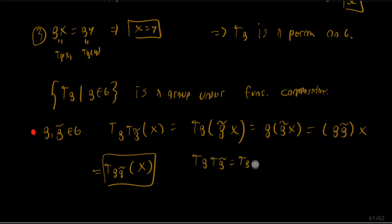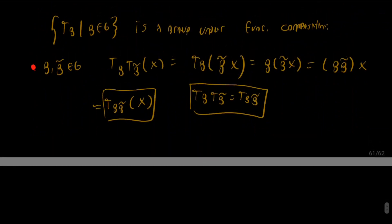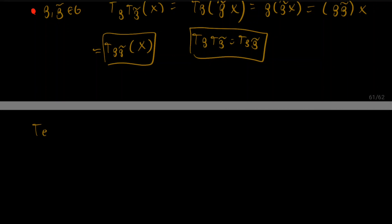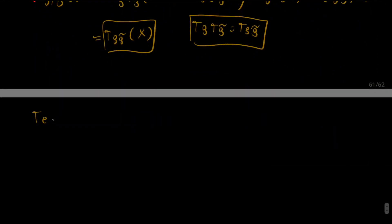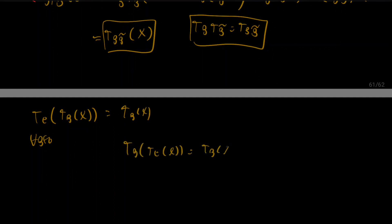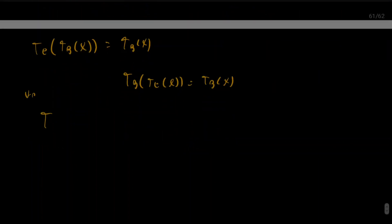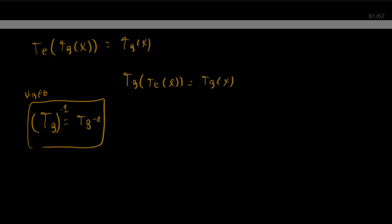Using this property, the identity of our set is T_e, since T_e ∘ T_g = T_{e·g} = T_g and T_g ∘ T_e = T_g. For inverses, the inverse of T_g is T_{g⁻¹}. These facts, together with the associativity of function composition, prove that this set under function composition is indeed a group.